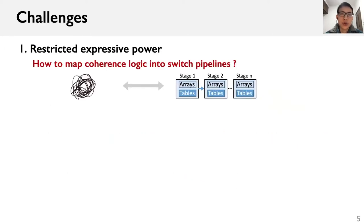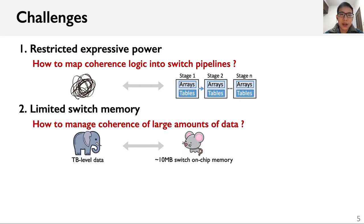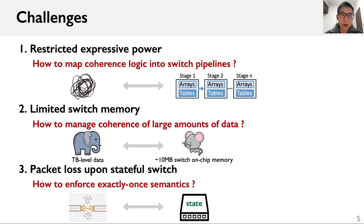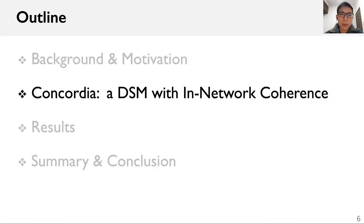There are three challenges to designing a fast cache coherence protocol using programmable switches. First, the expressive power of programmable switches is limited — all procedures must be represented as match-action tables, and the processing pipeline must meet the hardware resource and timing requirements of switch ASICs. However, cache coherence is complex, so how do we map coherence logic to switch pipelines? Second, switch memory capacity is only about 10 megabytes and cannot store metadata for all cache-line blocks — how do we manage coherence of large amounts of data? Third, packet loss is inevitable, but when the switch is stateful, how do we enforce exactly-once semantics? Next, we will introduce Concordia, show some results, and give a summary and conclusion.